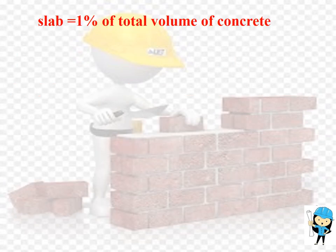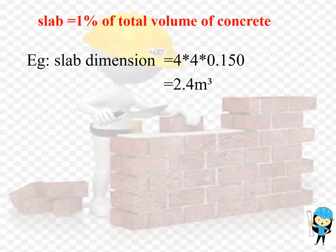As per BM Dutta recommendation, the amount of steel required for the slab is equal to 1% of the total volume of concrete. Now we are going to see an example to calculate the steel quantity required for slab construction. Here we have taken slab dimensions as 4 × 4 × 0.150. By multiplying these three values we get the volume of concrete as 2.4 m³.